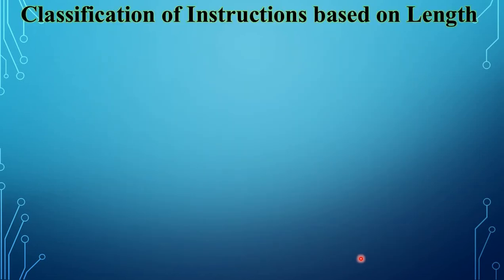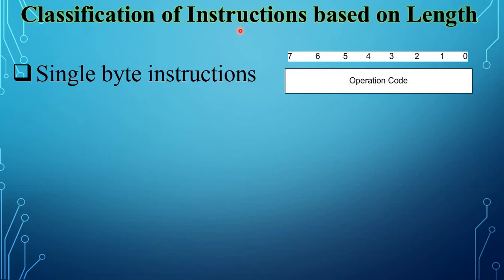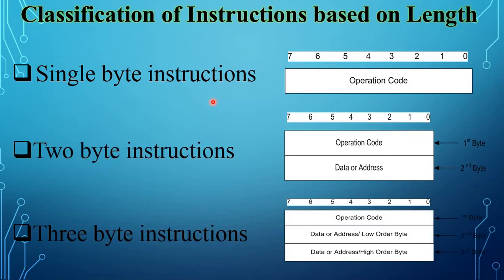The next topic is classification of instructions based on length. The 8085 instructions are classified into three groups according to word size: single-byte instructions, 2-byte instructions, and 3-byte instructions. Single-byte instructions contain only one byte — the operation code — with no data or address field. Two-byte instructions contain 2 bytes: the first byte contains the operation code and the second byte contains 8-bit data or 8-bit address.